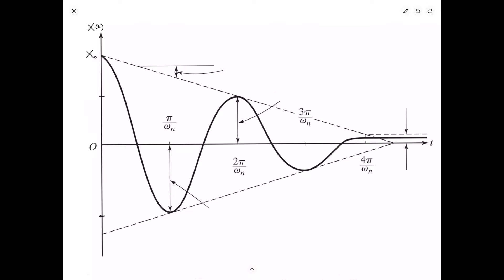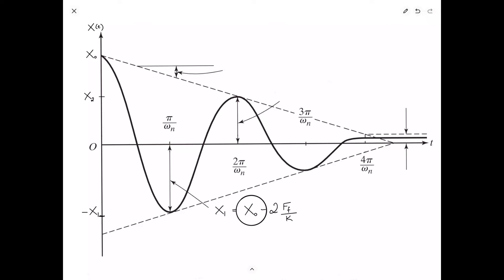Labeling the diagram: X sub zero is the amplitude of the first peak, the first trough amplitude is X1 at position negative X1, and X2 is the second peak. We showed that X1 equals X sub zero minus two F sub F over K, and the second peak X2 is a reduction from the initial peak of four F sub F over K.